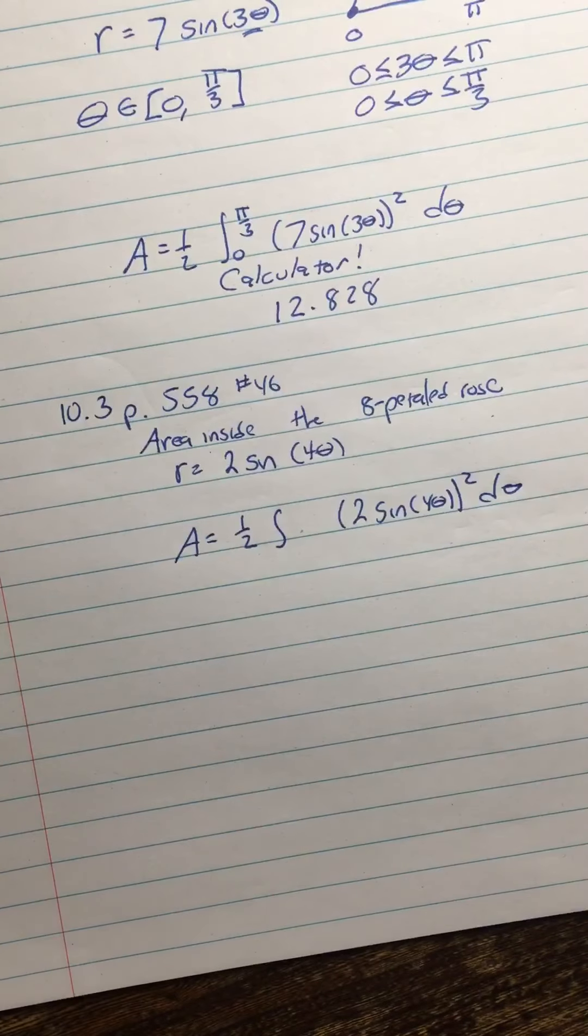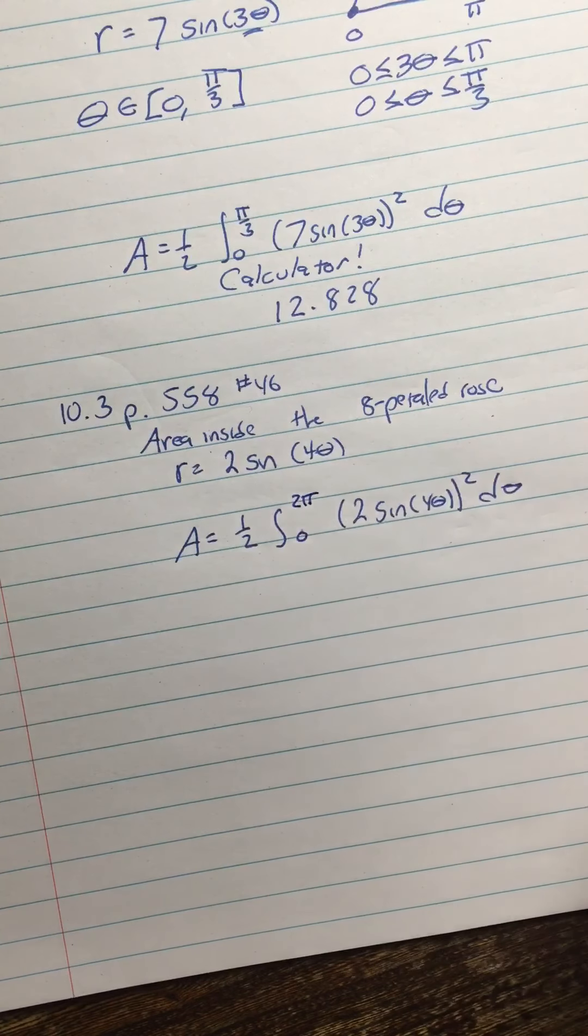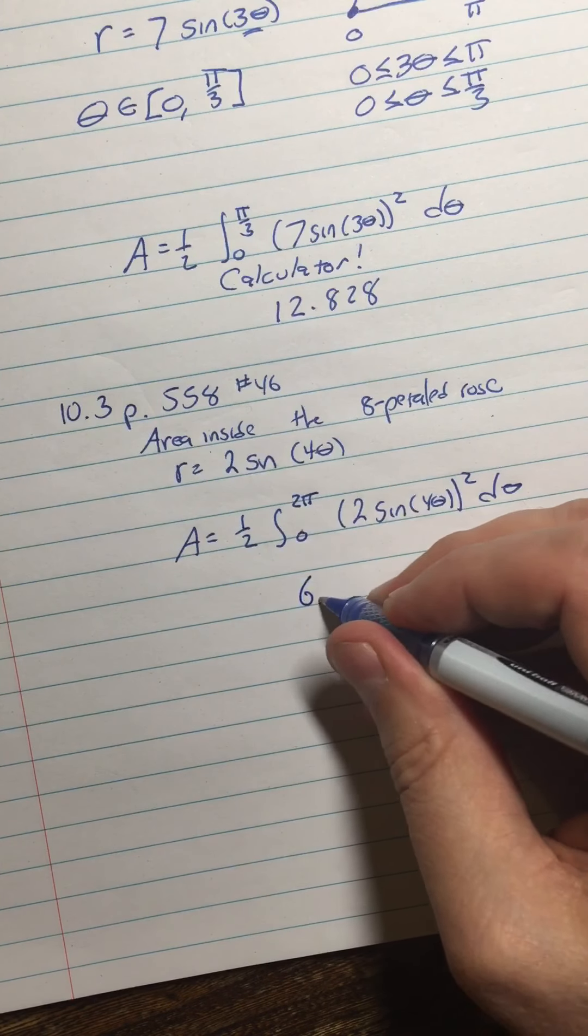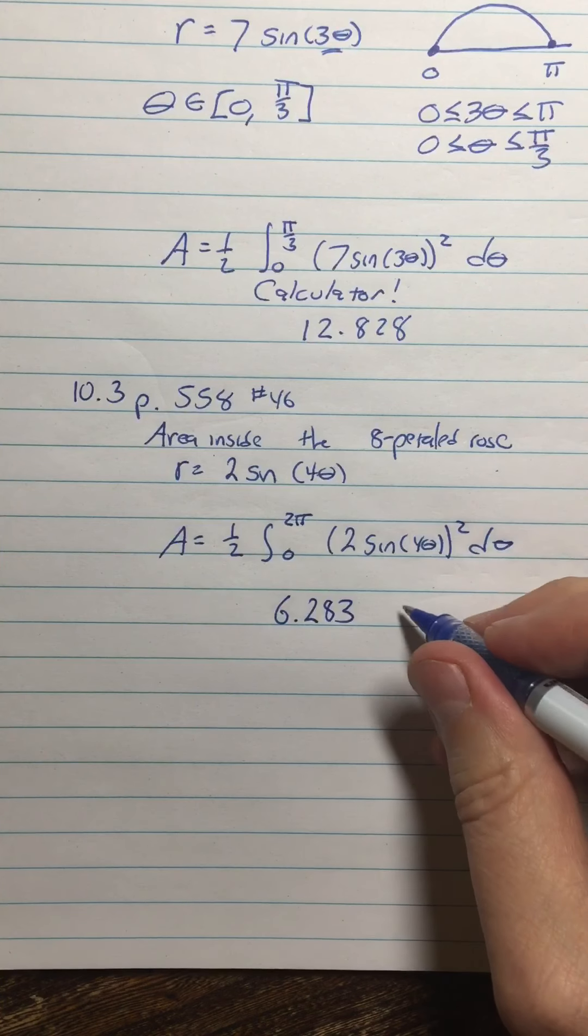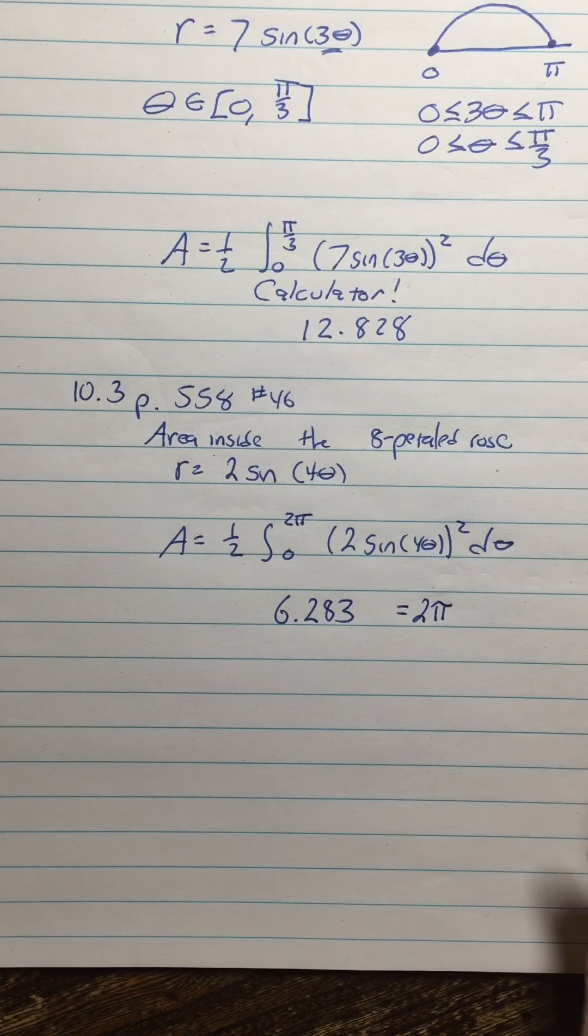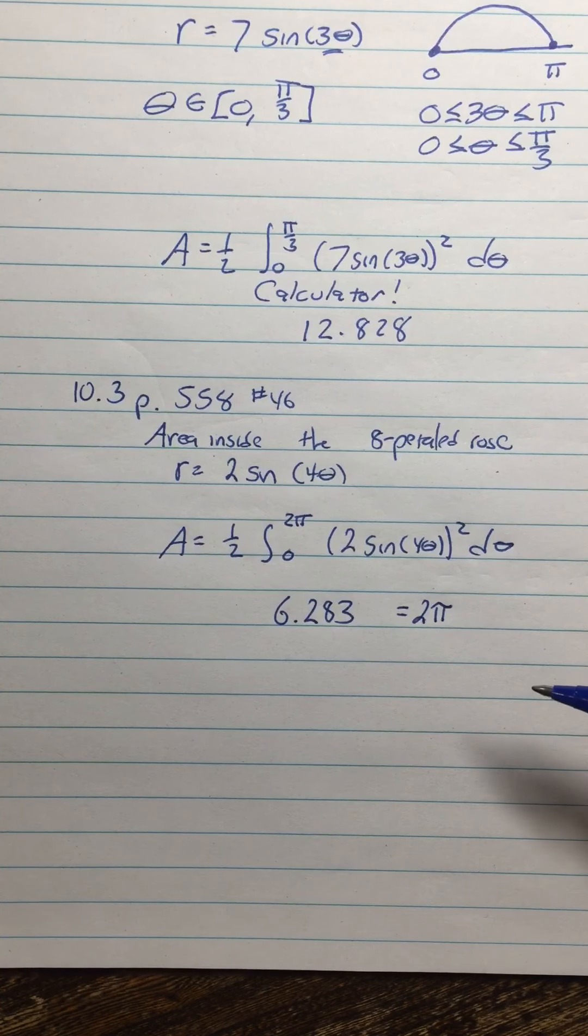Without even looking at the graph, I already know that the domain of the function is zero to 2 pi. Then I just throw that in my calculator and I get 6.283, which blows my mind because it's two pi. It's exactly 2 pi—you go out to like 10 decimal places, it's probably exactly 2 pi.